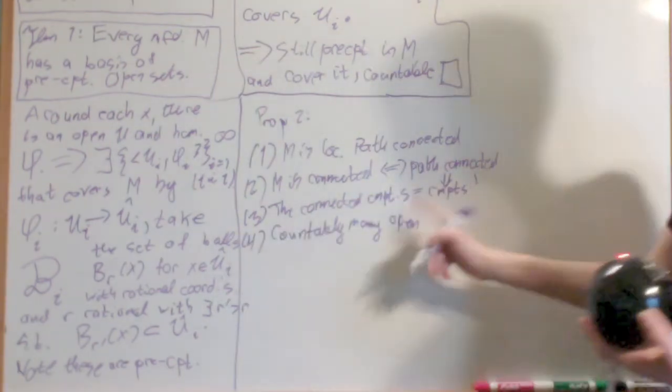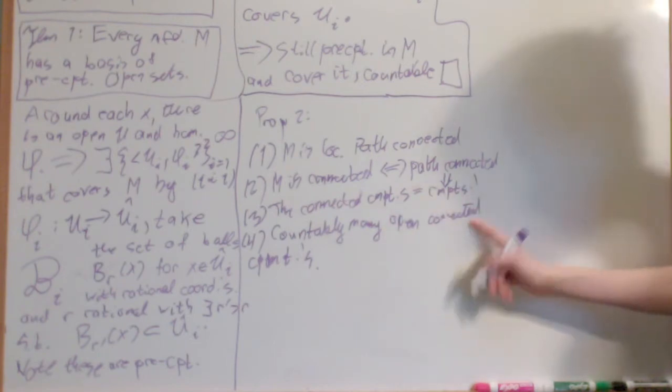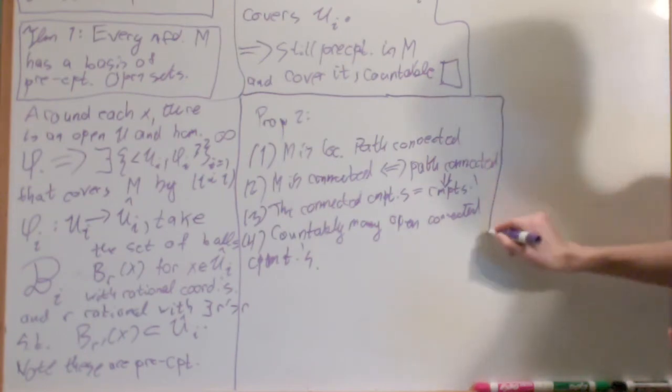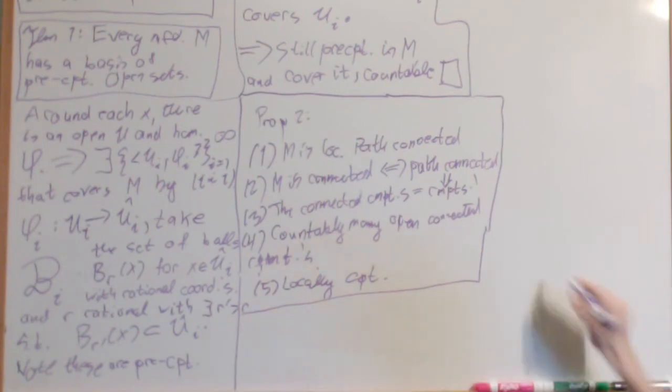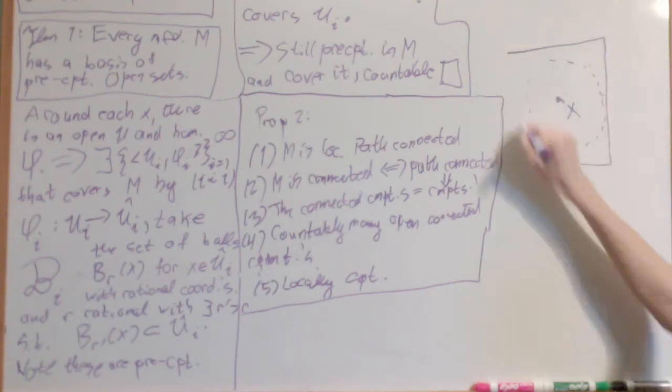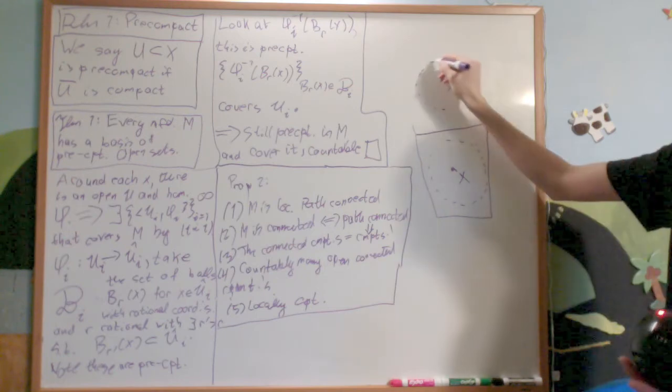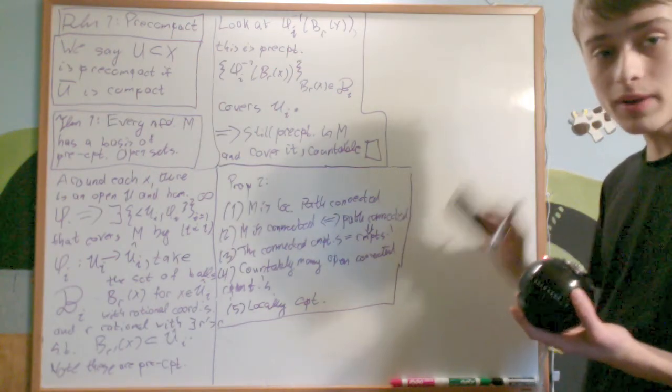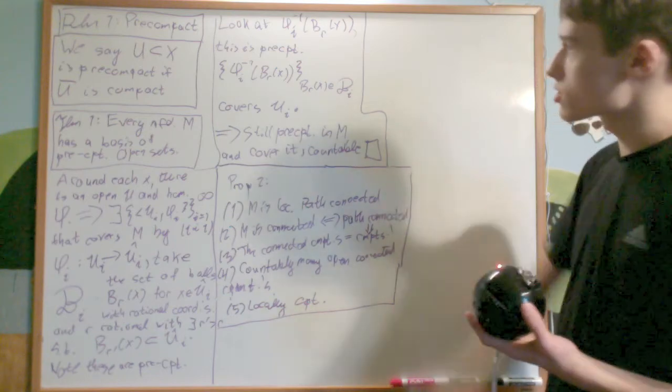And number four, it has countably many open connected components. So not only does it has countably many connected components, but also has that those connected components are open. And I'll leave that one for you to prove. And then one more, one more property is that it's locally compact. Locally compact means that around any point x, I can choose an open interval such that a compact set contains it. So in our case, around every point, you can find an open ball that is pre-compact. So I just take the closure of it. That's a compact set that contains that open set. And then we're done. This was a complicated proof, but it led to a lot of really good properties.